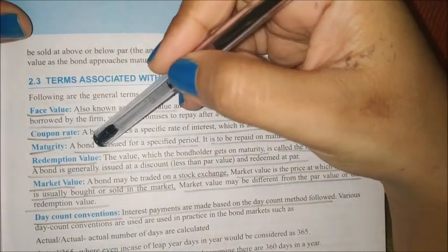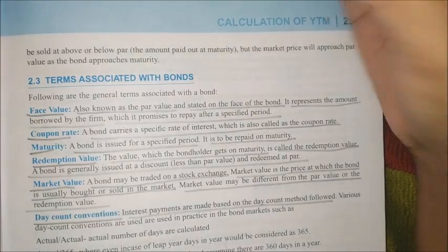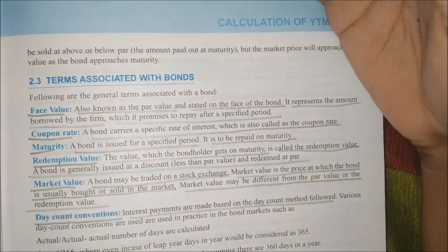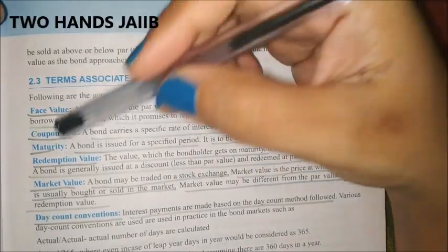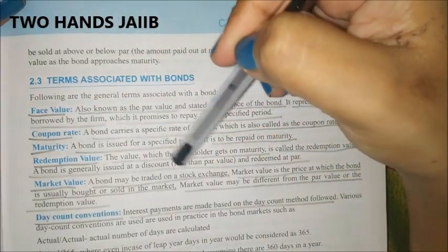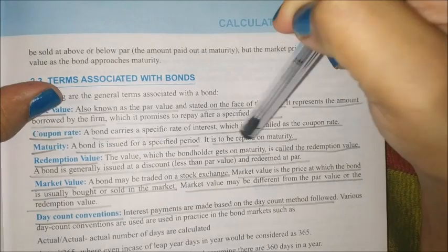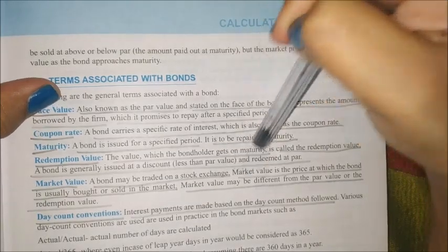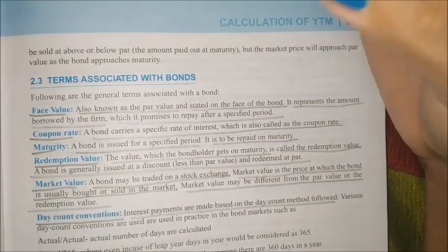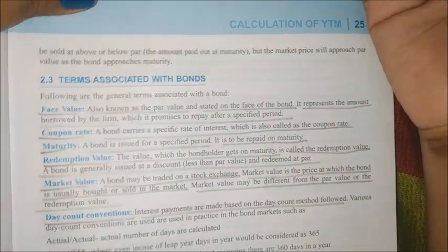Next is maturity. A bond is issued for a specific period — for example, 5 years. The total time period for which the company has issued the bond is called the maturity period. Redemption value is the amount the bond holder receives at maturity when the time period ends. For example, if you held a bond for 5 years, what you receive at the end is the redemption value.